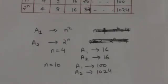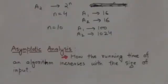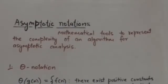So we are concerned with how the running time of an algorithm increases with the size of input, and this is called asymptotic analysis. In asymptotic analysis, we evaluate the performance of an algorithm in terms of input size, and we calculate how the time or space taken by an algorithm increases with input size.